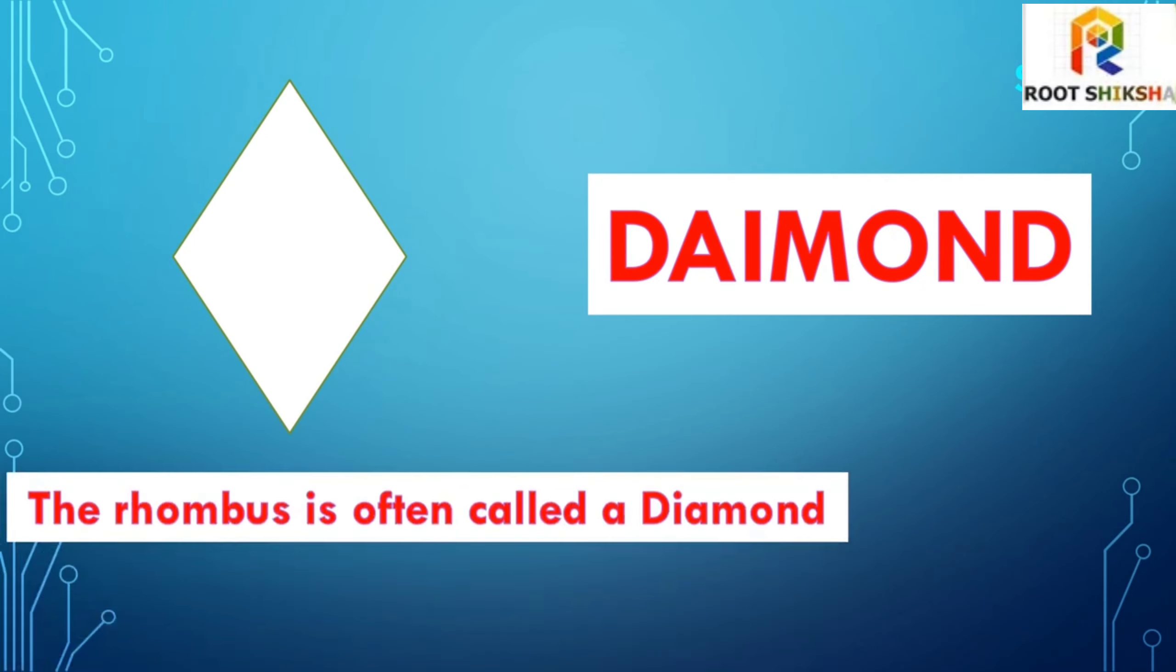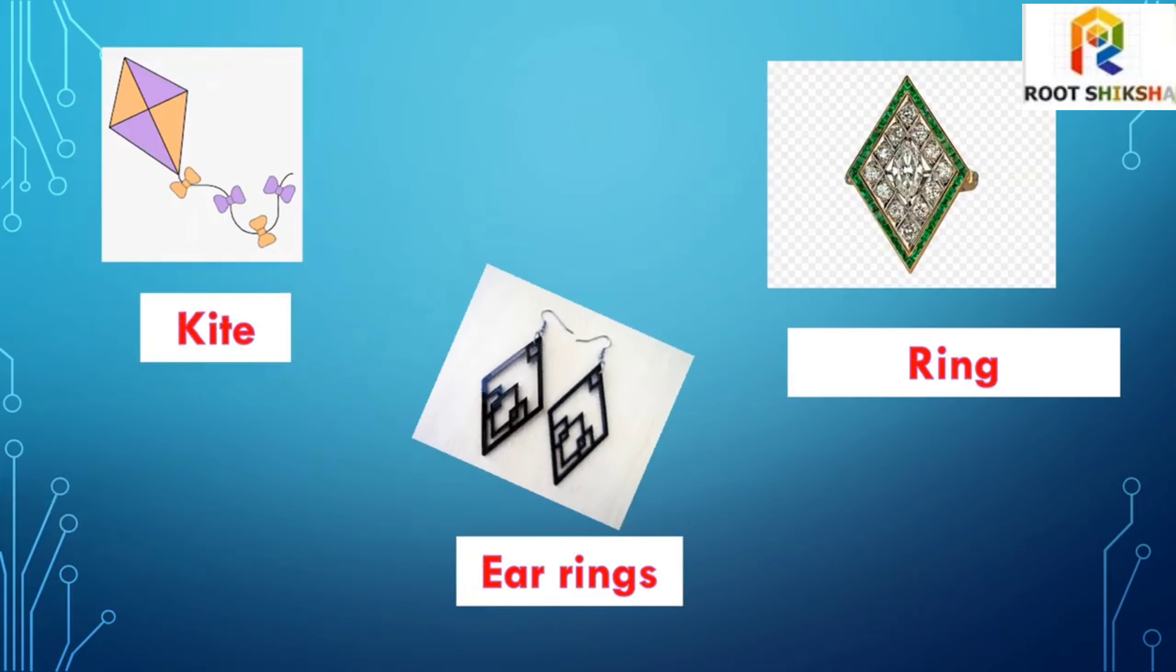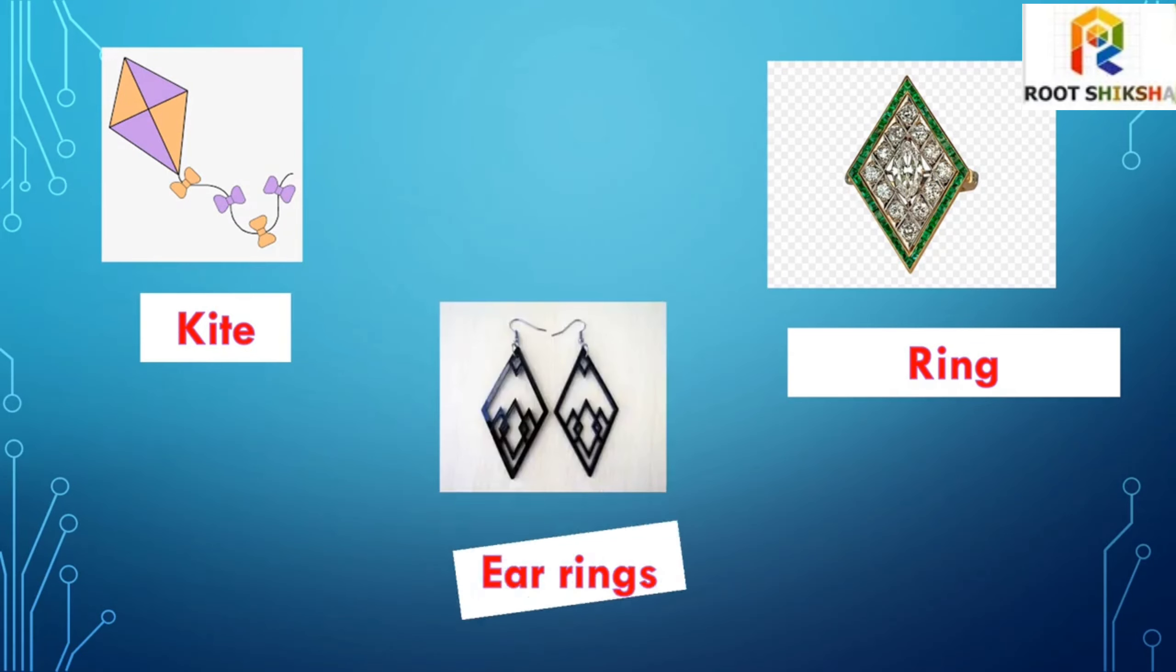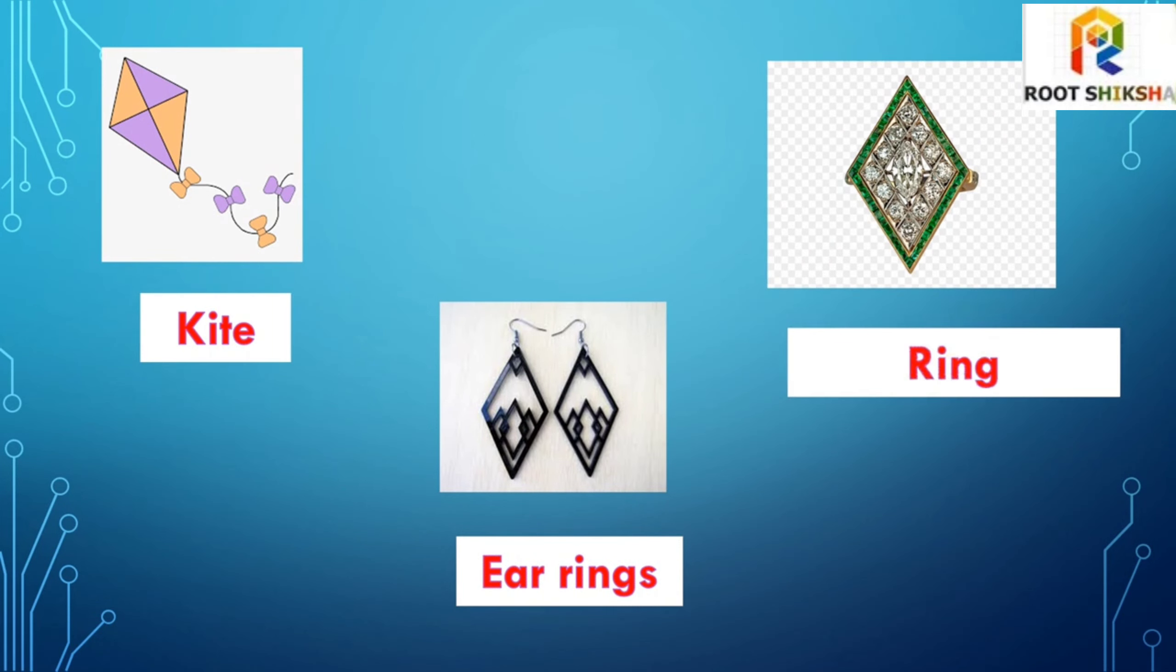Diamond. The rhombus is often called a diamond. For example: kite, diamond shape earrings, diamond shape ring.